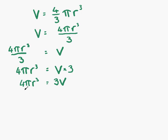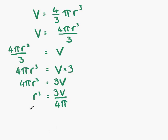The next thing we want to do is remove the 4 pi part and put it on to the other side, which will just leave us with R cubed on the left. Since 4 pi is multiplying R cubed, when we take it across it divides on the other side. So R cubed equals 3V divided by 4 pi.